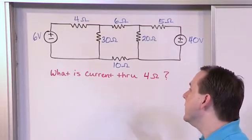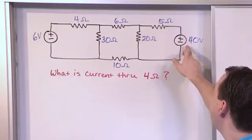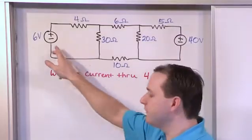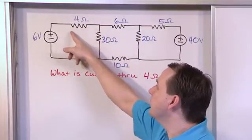So we have other methods, and what makes it a little tricky is we have two voltage sources. We have a 40 volt source here and we have a 6 volt source on the other side. So how do we figure out what the current is going to be through here?